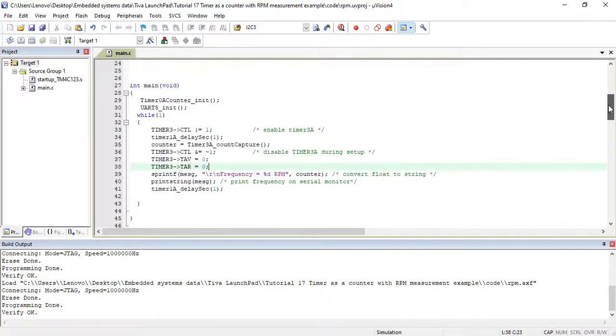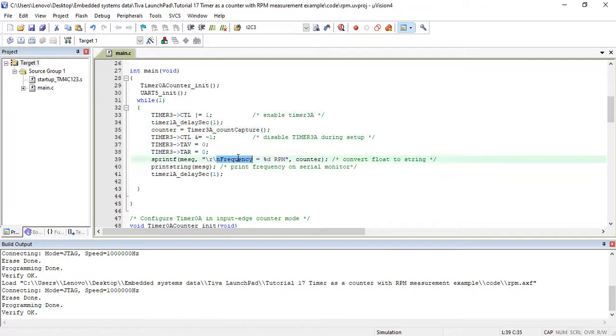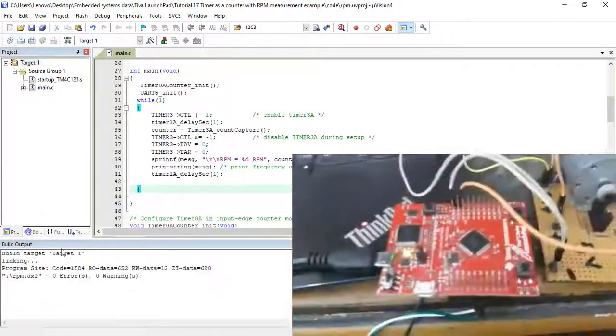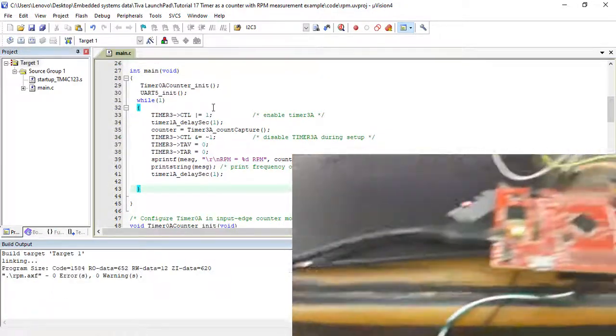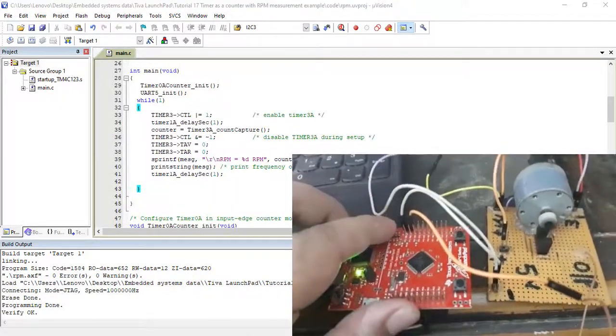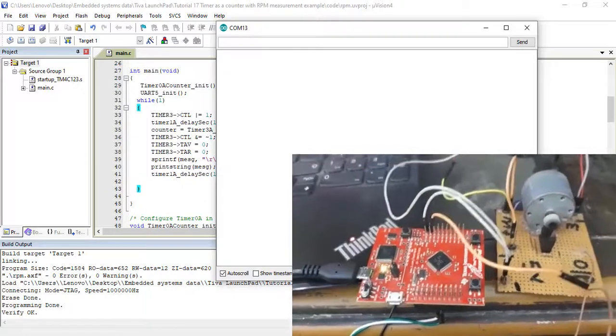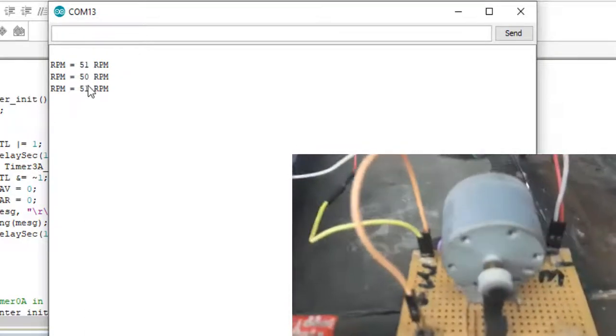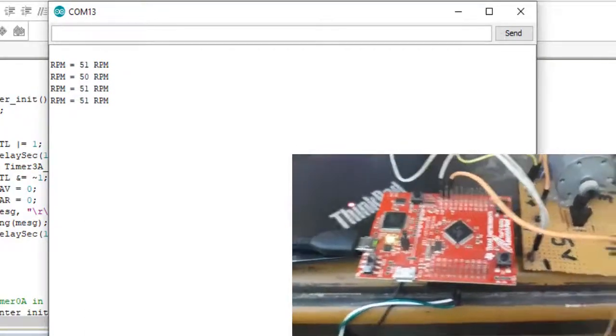This is demo code to measure motor speed using TM4C123 Tiva launchpad timer in counter mode. This code measures the motor revolutions by counting the number of pulses for one second. After that upload the code to TM4C123 Tiva C launchpad. And press the reset button. Finally, open the serial terminal on your computer by selecting the COM pin to which USB to serial converter is connected. You will get the DC motor speed in RPM on serial terminal.